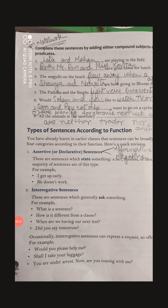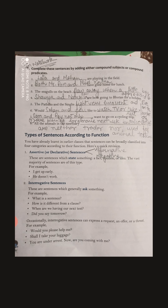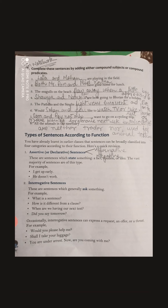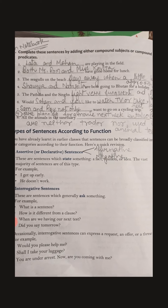In this exercise, we have to complete the sentences by adding either a compound subject or a compound predicate. For example, sentence one: blank 'are playing in the field.' We have to fill a compound subject — not a single word. We use conjunctions for this. I have written 'Lata and Mohan', but you can write your own answer as well.